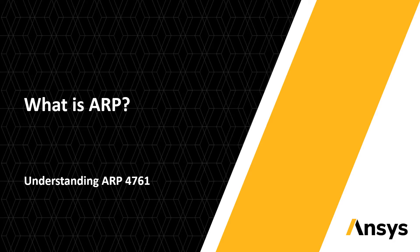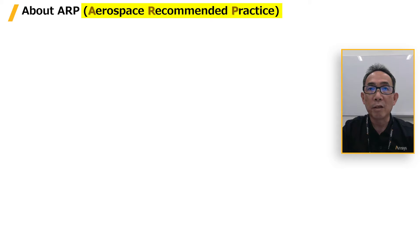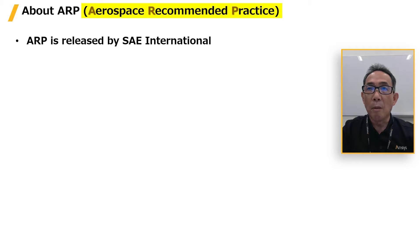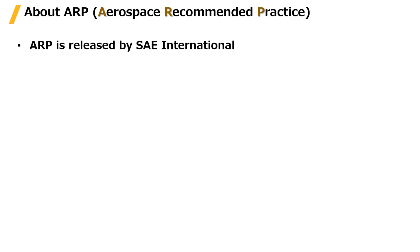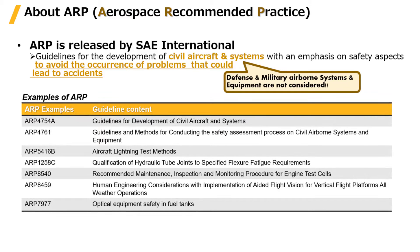Hello everyone. One of the most important recipes for developing an aircraft is ARP. The ARP provides various guidelines for developing an aircraft. ARP is an acronym for Aerospace Recommended Practice, provided by SAE International, an American nonprofit organization on mobility. ARP provides guidelines for development and verification in various aircraft-related areas.